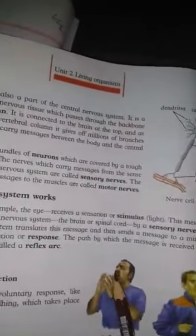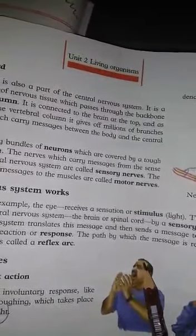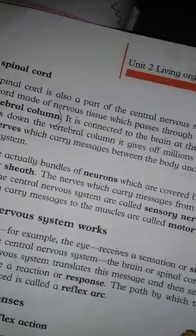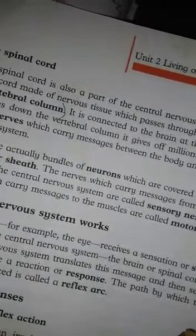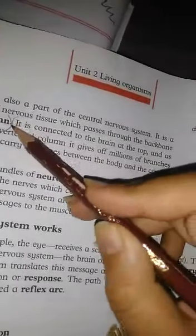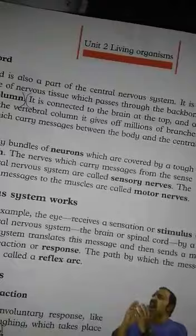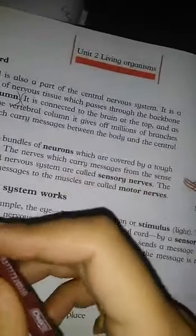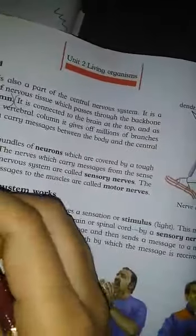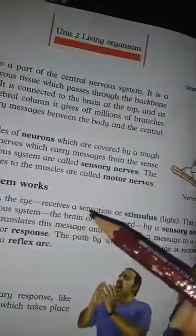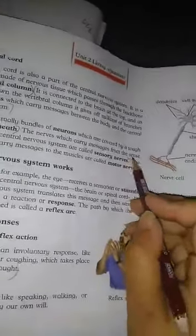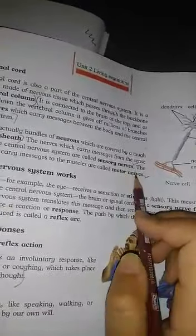Next, write the definition of spinal cord and the function of spinal cord — it is connected to the brain and serves the nerve system. Then write what are nerves: nerves are bundles of neurons covered by a tough covering sheet. Also write the function of nerves and the difference between sensory nerves and motor nerves.